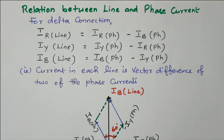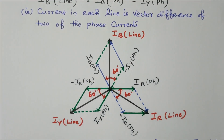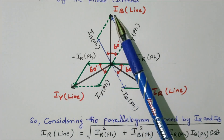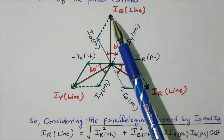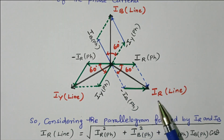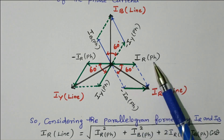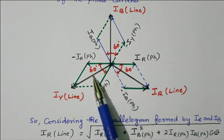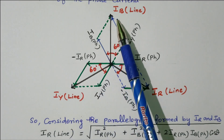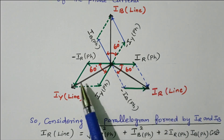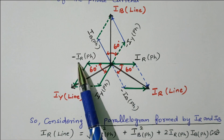Based on that, we can draw the phasor diagram relating phase current and line current. The line currents IR line, IY line, IB line all differ by 120 degrees. We start with the phase currents: IR phase on the X-axis, IY phase with 120 degree phase difference, IB phase with another 120 degree phase difference. On the opposite side we have minus IR phase, minus IY phase, minus IB phase respectively.